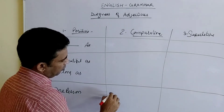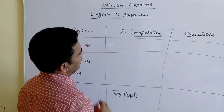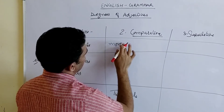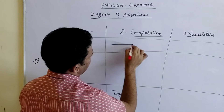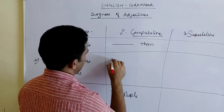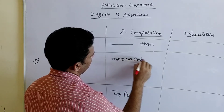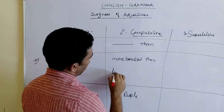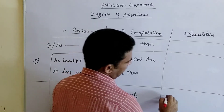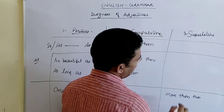When we compare the quality of two people, then we use the comparative degree. In comparative degree, sometimes 'more' is used, and it is followed by 'than'. For example: 'more beautiful than' or 'longer than'. So when comparing two people, we use the comparative degree.